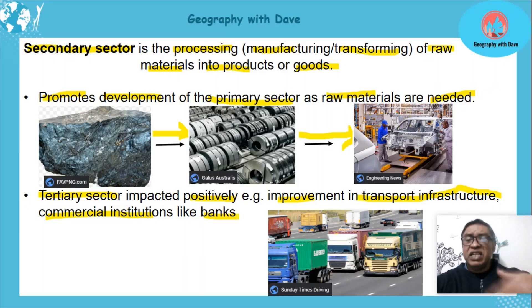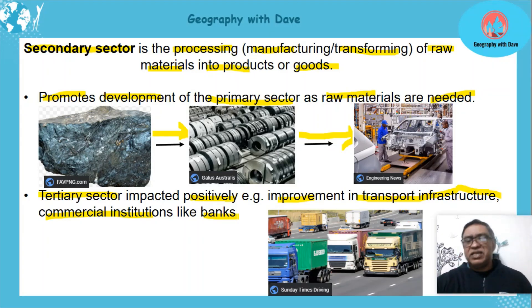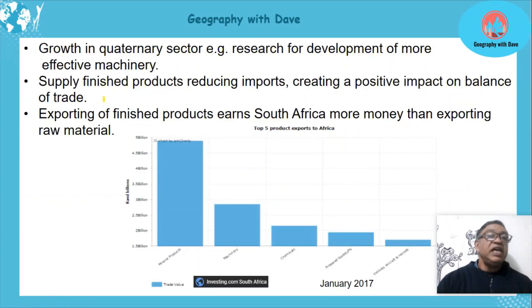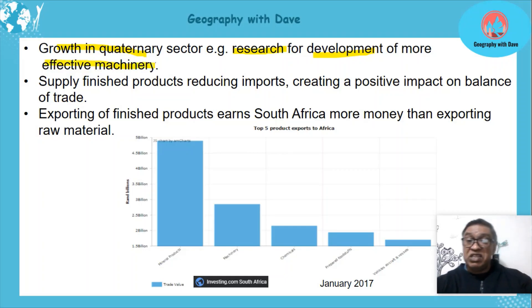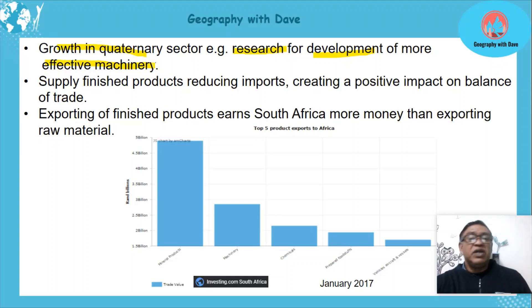As more manufacturing and computers and machinery come in, more tertiary education facilities develop — universities and colleges producing engineers and technicians. The list is endless in terms of the impact on the tertiary sector. Even the quaternary sector grows, for example doing research for the development of more effective machinery and electronics. So there's a clear link between all economic sectors — secondary activities influence all of them.